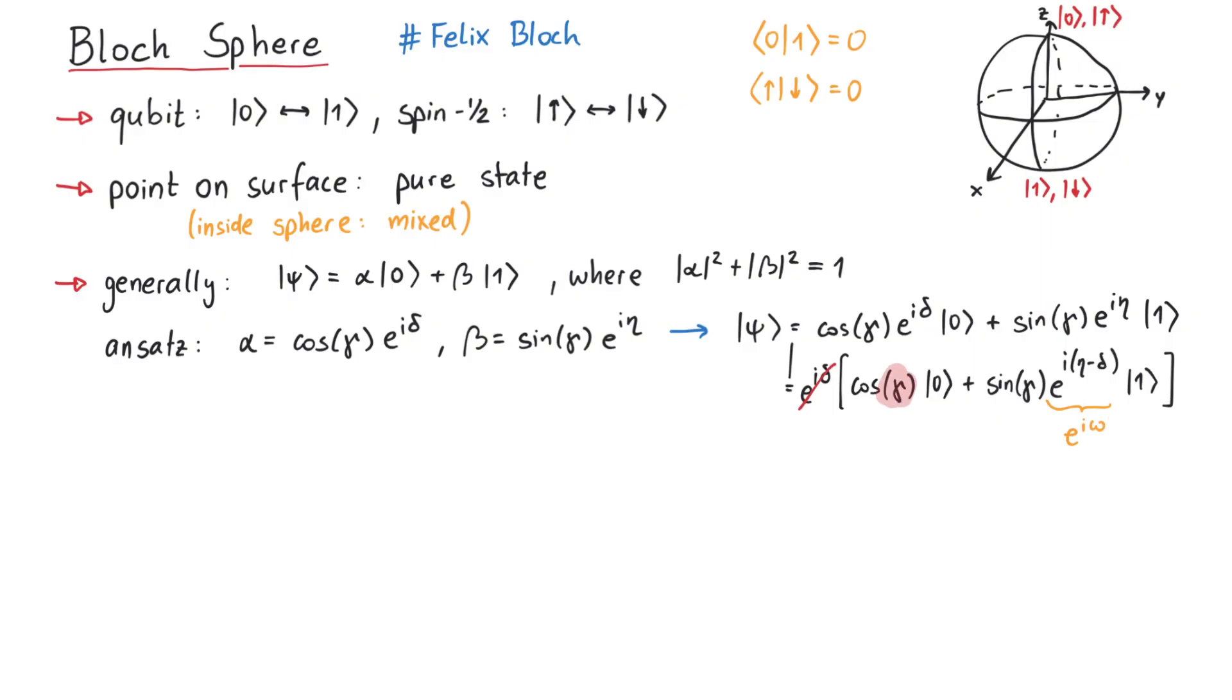Now we want to connect the remaining two parameters, gamma and omega, to the spherical coordinates theta and phi. Remember that theta starts at the z-axis and goes down from there, taking on values between 0 and pi. The angle phi starts at the x-axis, goes around horizontally, and can take on values between 0 and 2 pi. So in order to have the state 0 at the north pole, we demand that if theta is 0 and phi is at any value, only the coefficient in front of 0 remains. At the south pole, for theta equal to pi and phi at any value, we want to have the state one. You can easily verify that if we set gamma to be theta over 2 and omega equal to phi, this fulfills all requirements.